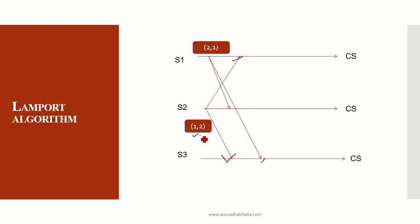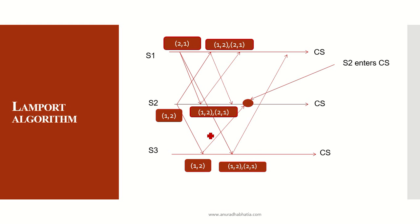The message indicates the critical state needed and the resources requested. All algorithms follow a three-step process: first, requesting the critical state; then executing in the critical state; then releasing from the critical state so that resources can be used by other processes. Since S2 has asked first, the timestamp of S2 is first, so S2 will enter the critical state first. S2 has the first timestamp, so it will enter into the critical state first.